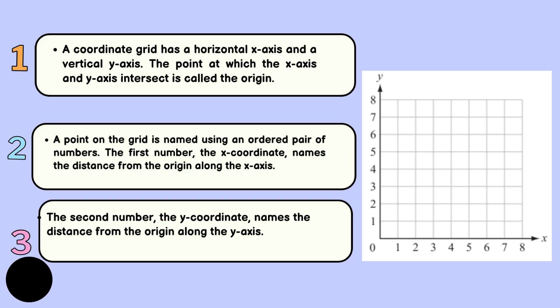So a coordinate grid has a horizontal x-axis and vertical y-axis. The point at which the x-axis and y-axis intersect is called the origin.